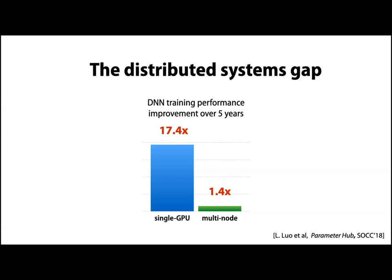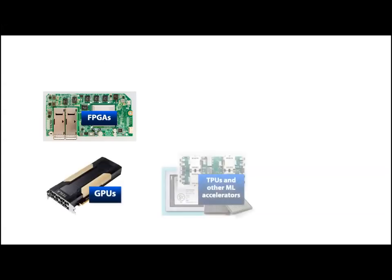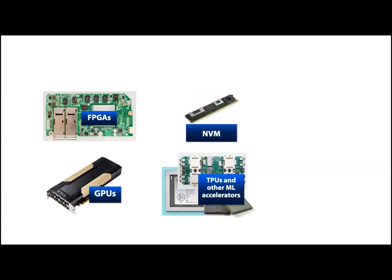In a single-node environment, performance has increased by 17.5x on one DNN training workload. But in a multi-node environment, we've only seen a 40% improvement in throughput. Precisely because we have all of these new accelerators in the data center and new technologies like fast memory, we've sped up single node performance so much that distributed systems are now the bottleneck.